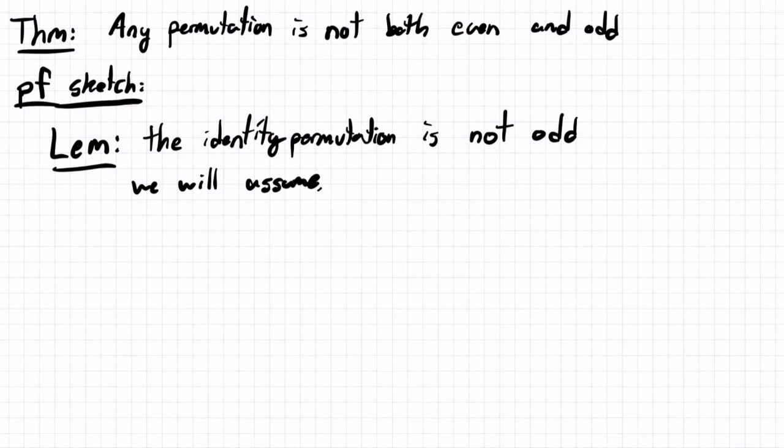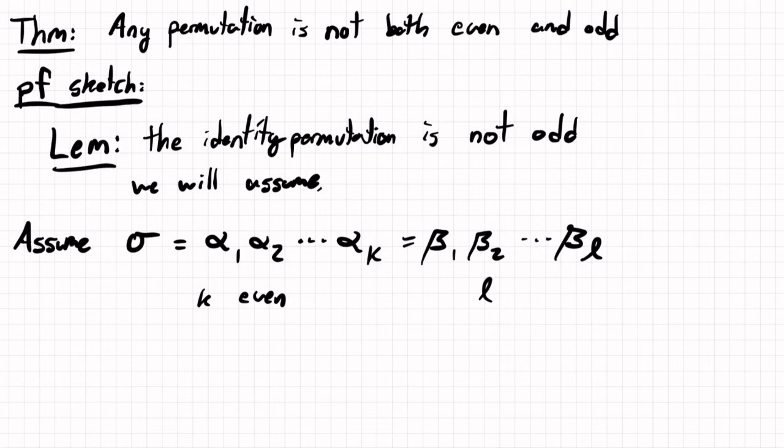So now the rest of the proof goes like this. We'll assume that sigma is a product of two-cycles: alpha 1, alpha 2, ... alpha k, where k is even, so that sigma is even. But it's also odd, so we'll say it's also a product of cycles beta 1, beta 2, ... beta l, where l is odd.